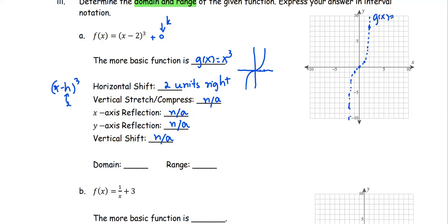This is g(x) equals x to the third. Then for f(x) equals (x minus 2) to the power of 3, the graph is shifted right 2 units. From the point (0, 0), shift over 2 units. The point (1, 1) shifts 2 more units to the right. For the function value negative 8, add 2, shifting over to x equals 4. On the left side of the graph, for negative 1, shift to the right to become 1.